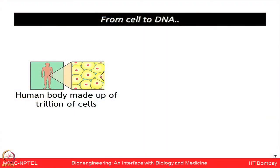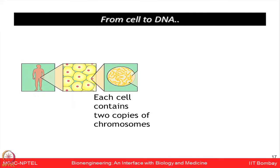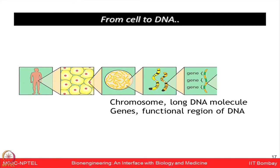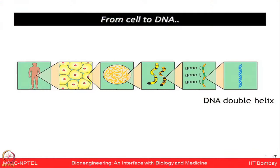Let us now think about where in the cell we can find DNA. The human body is made of billions and trillions of cells. Each cell has a nucleus containing genetic material. Each cell contains two copies of chromosomes. If you expand further, you can see long DNA molecules, genes, and functional regions of DNA. So from the cell perspective, each cell has a nucleus, which has chromosomes, which contain genes and their DNA.